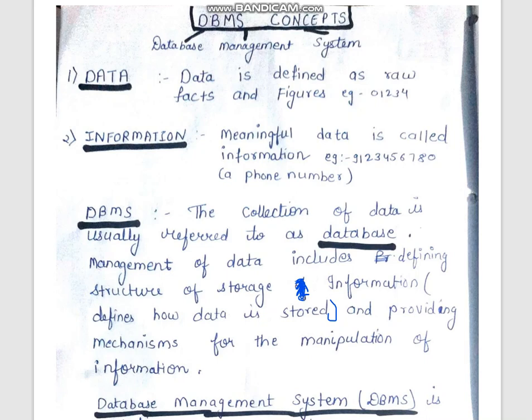DBMS is actually made with three words: Database, Management, and System. If we understand these three words individually, then we will get to understand DBMS better.